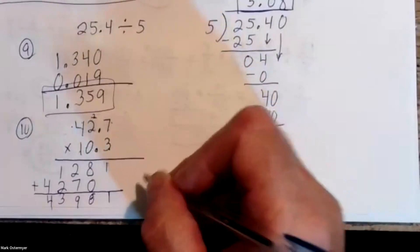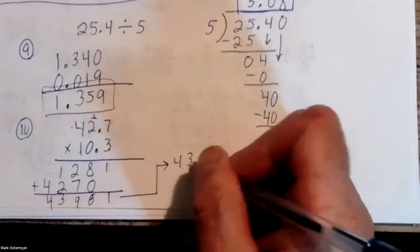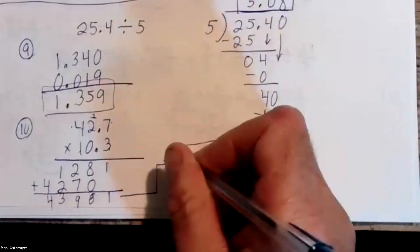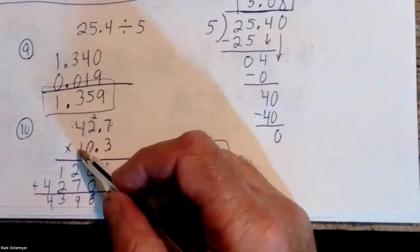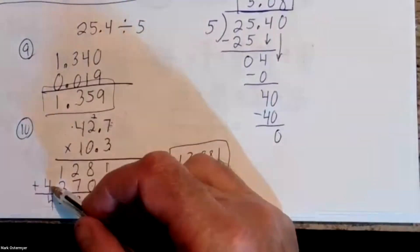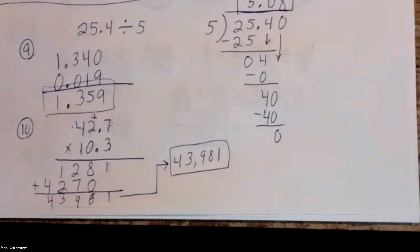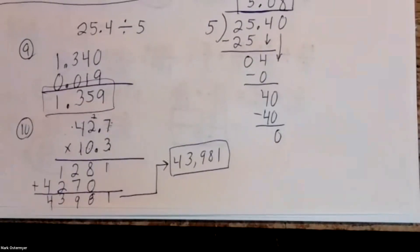Your product is forty-three thousand nine hundred eighty-one. Notice zero times seven is zero, then I moved over to the one. One times seven is seven, one times two is two, one times four is four — over eleven.